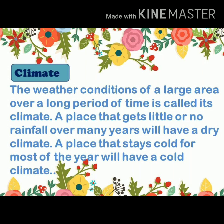For example, there is a place in Rajasthan called Jaisalmer where there is very little or no rainfall, so the climate there is dry. Similarly, there is a place like Ladakh which has been cold for many years, so the climate there is cold. The weather of a place may change daily, but the climate of a place may not change for several years.